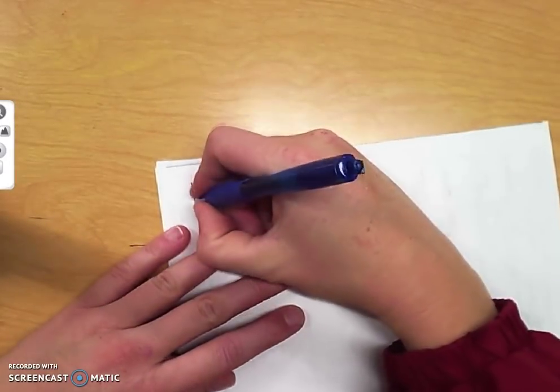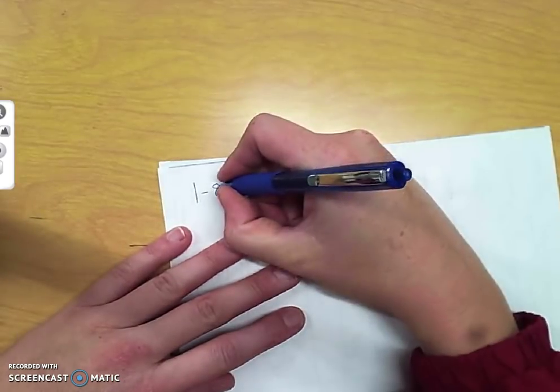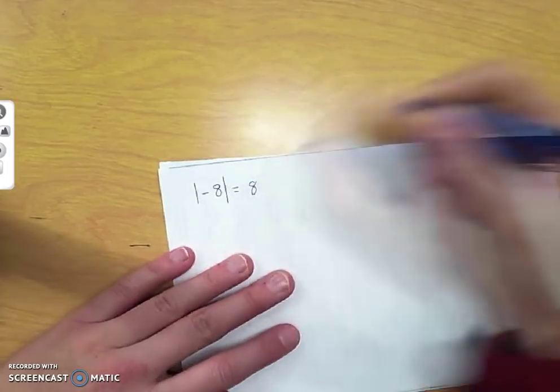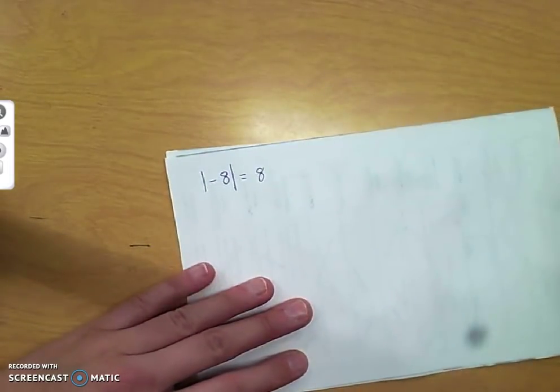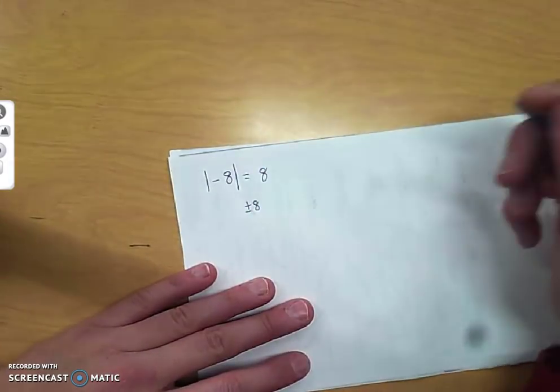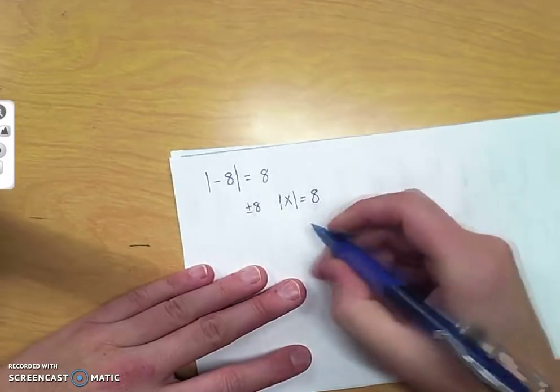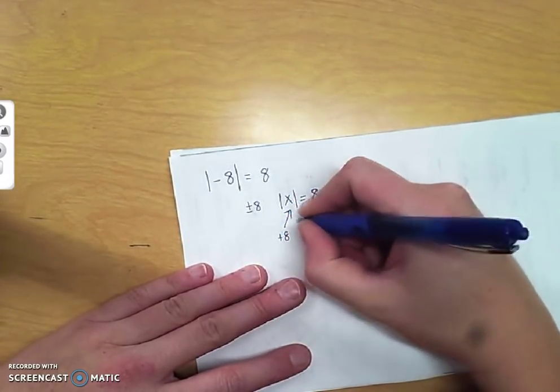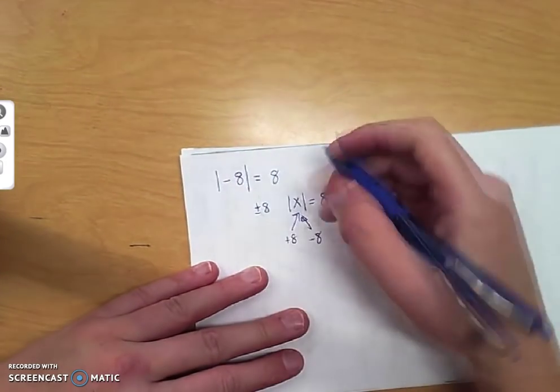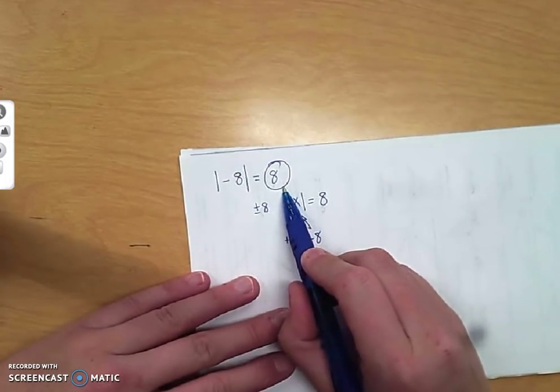The first question is about the absolute value of negative 8. The absolute value of negative 8 is 8. A lot of you said plus or minus 8, or positive 8, negative 8. But the absolute value of x equals 8 means what goes in is positive or negative, what comes out is always positive and only positive.